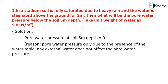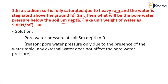Here is a problem. In a stadium, soil is fully saturated due to heavy rain and water is stagnated above the ground for 2 meters. What will be the pore water pressure below the soil at 5 meter depth? We can take the unit weight of water as 9.8 kN per meter squared.